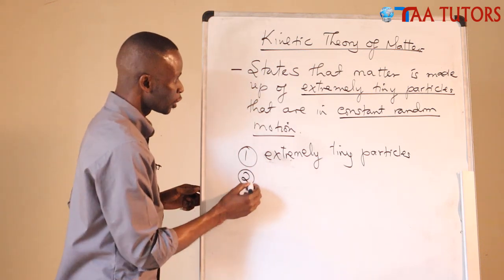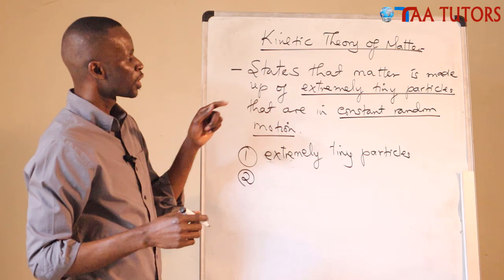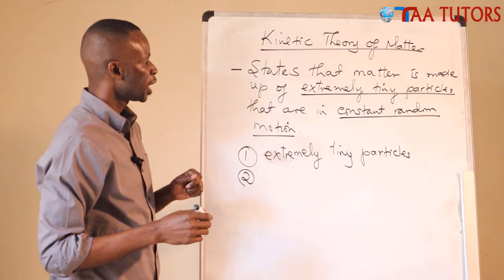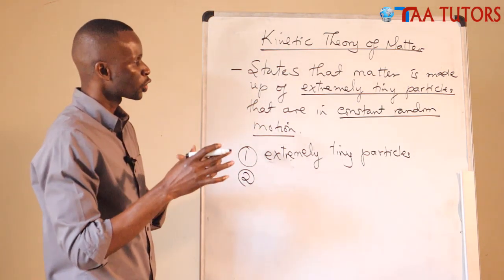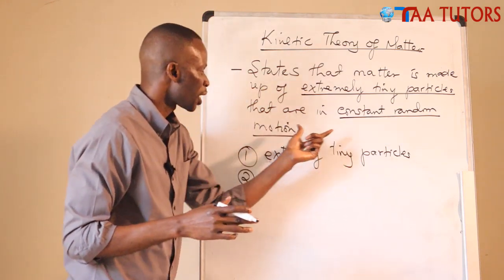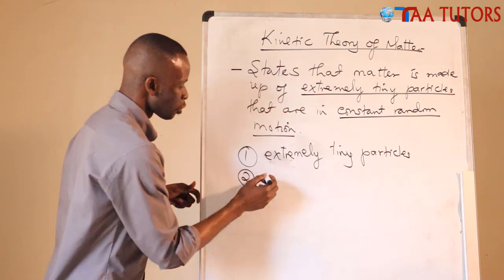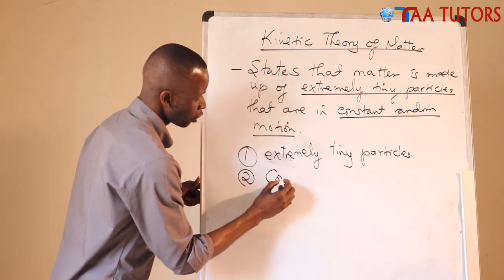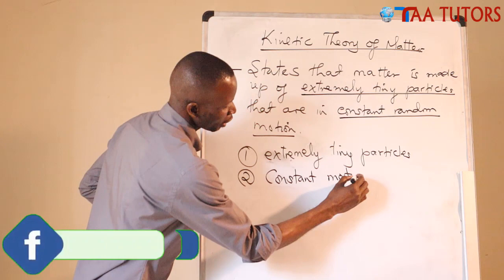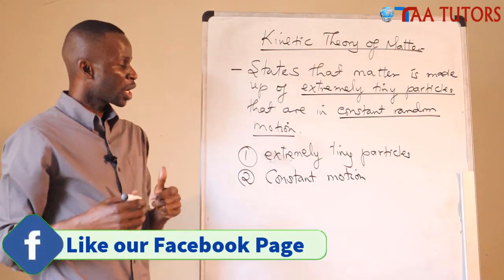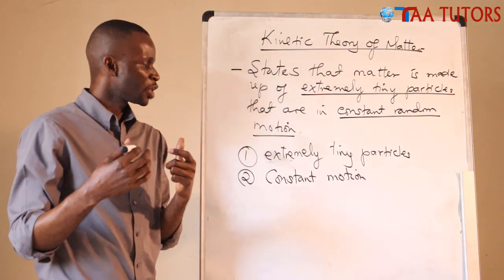Number two: according to kinetic theory of matter, matter is made up of particles that are in constant random motion. There are two things to take from here — constant and random. Constant motion means the particles are not stopping; they are continuously moving every time, every second.